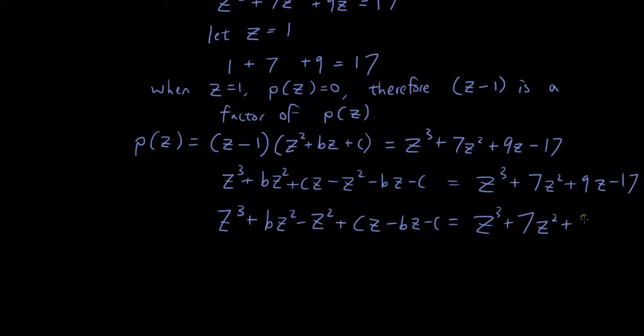So now I can see, if I want to find what b is, I can simply use this section here, where I have bz² - z² = 7z². So bz² - z² = 7z². So if I add z² on both sides, bz² = 8z². And therefore, b = 8.